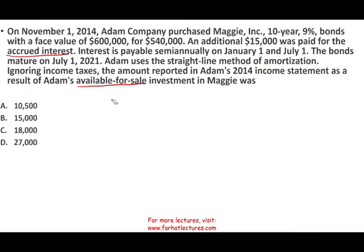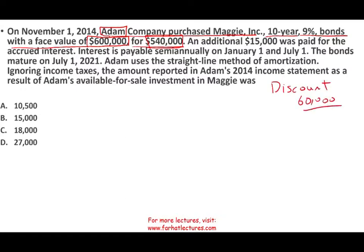So let's go ahead and start to dissect this problem that involves many aspects of different concepts. On November 1st, 2014, Adam Company purchased Maggie Inc.'s bond. It's a 10-year, 9% bond with a face value of $600,000 for $540,000. We have an investor — Adam Company — who purchased the bond. The bond has a face value of $600,000 and they purchased it for $540,000.